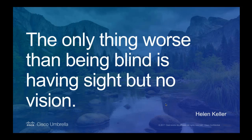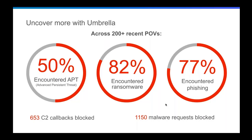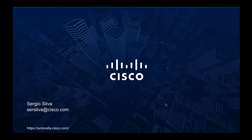Consider these numbers: over a short period of 14 to 30 days during a proof of value with us, you can see a high number of threats across organizations that are already running firewalls, antivirus, and other security tools. With Umbrella, we provide insight into threats and attacks you are currently missing. Please consider running a proof of concept with us to see what value we can bring to your organization. Thank you for your time today — I hope it was a good opportunity to understand the product.